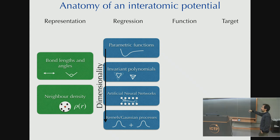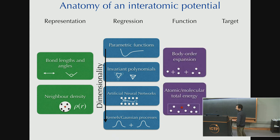Then, when it comes to regression, traditionally parametric functions have been used. But in the quantum chemistry community, invariant polynomials have been used and the body order expansion for two, three, four body terms. Artificial neural networks are a way of regressing data. And the kernel, the Gaussian processes that I outlined before is just a way of doing regression.